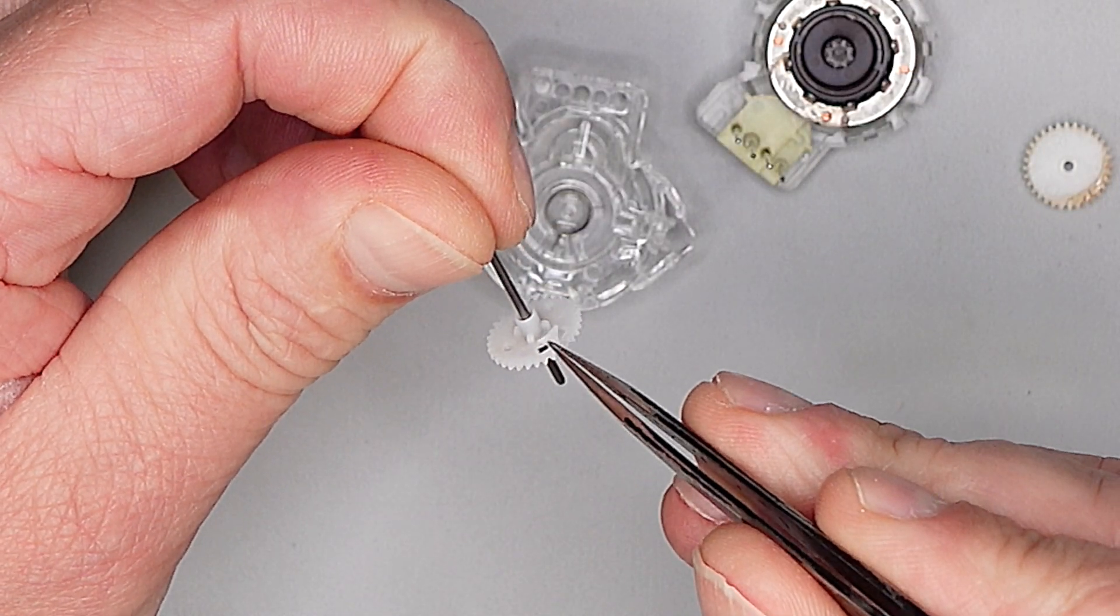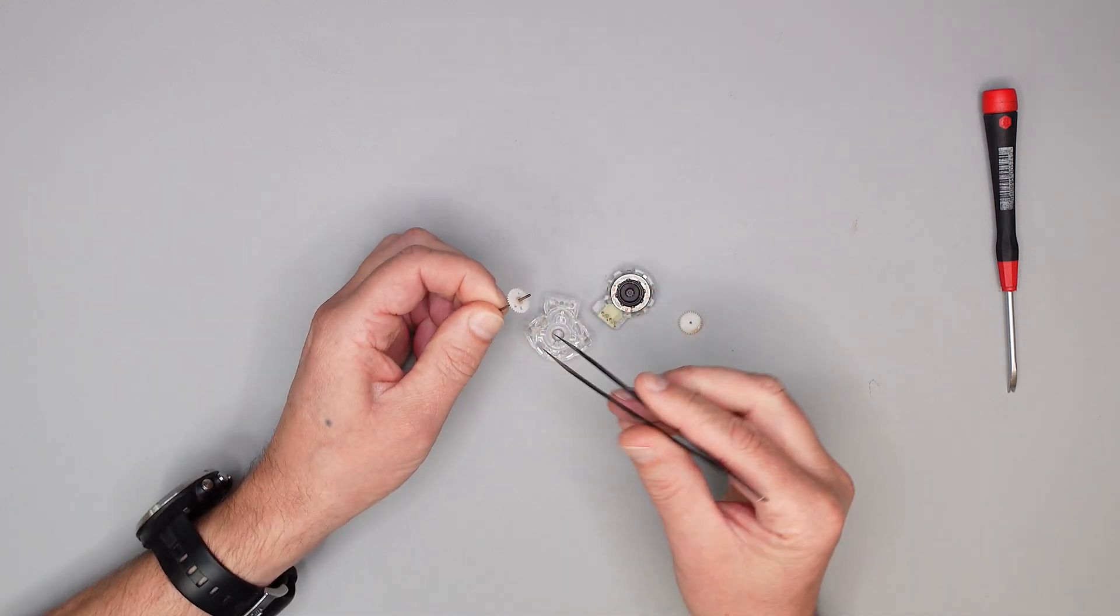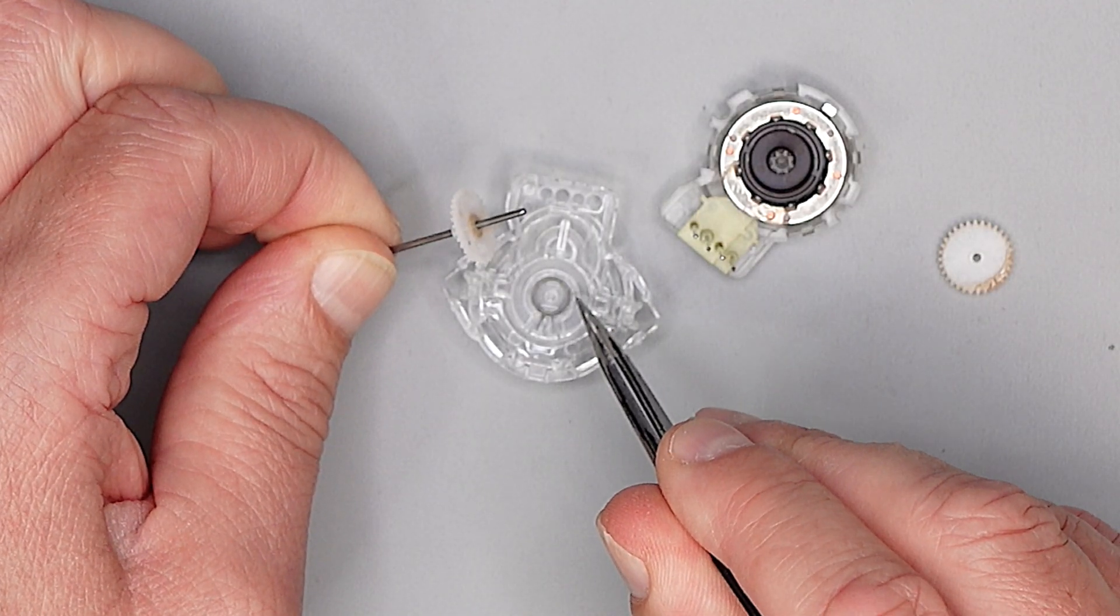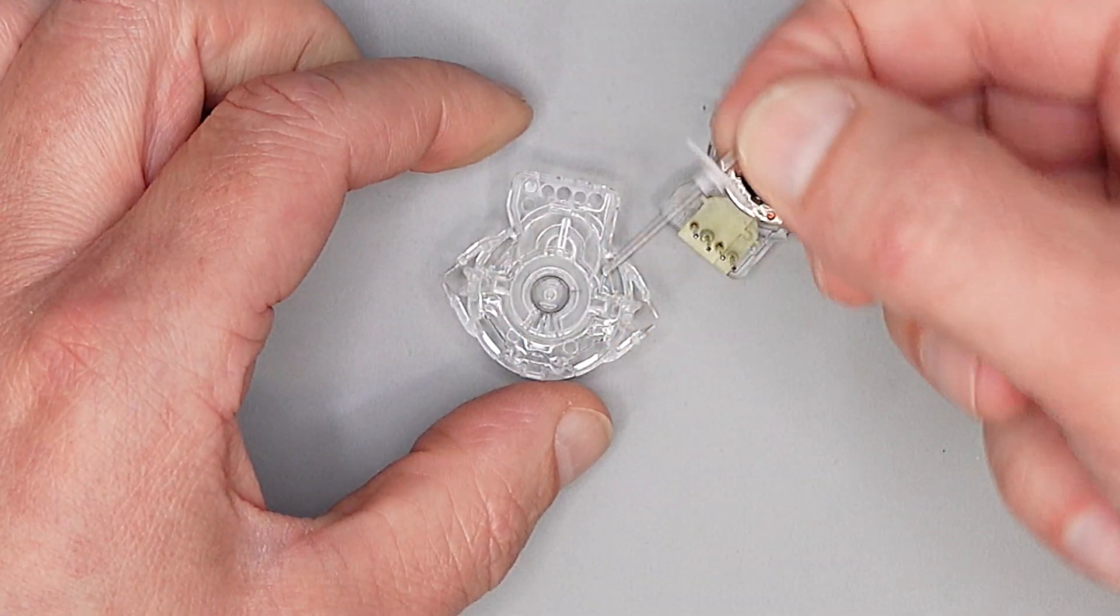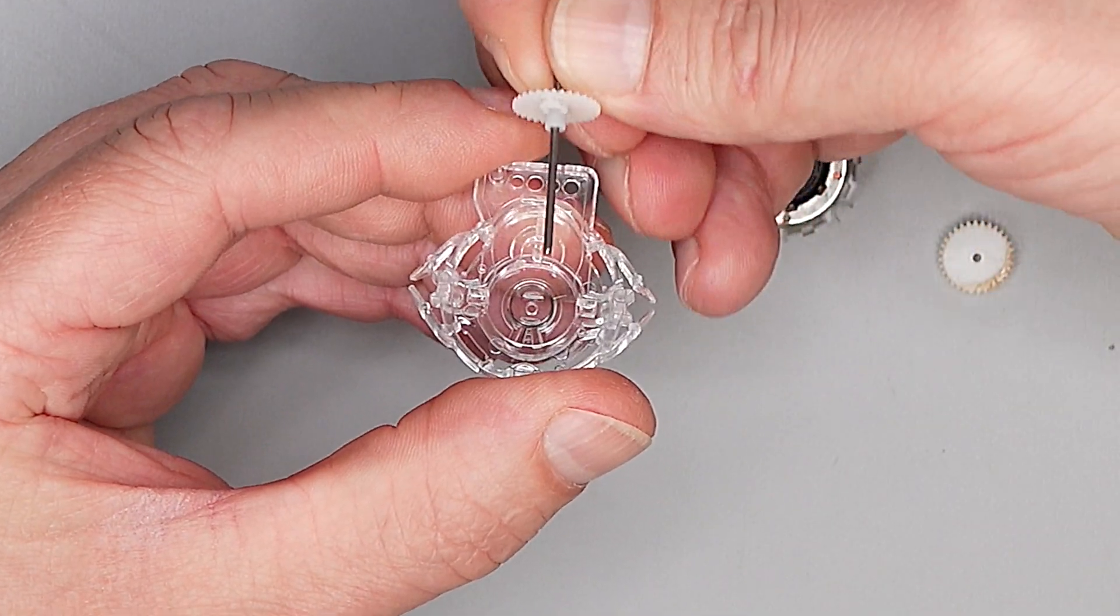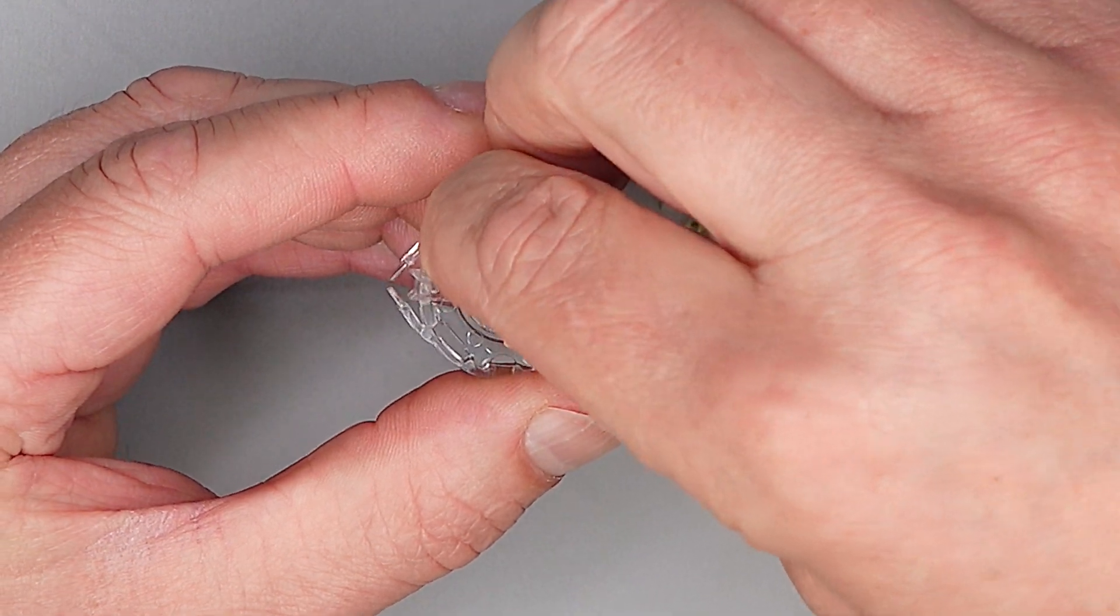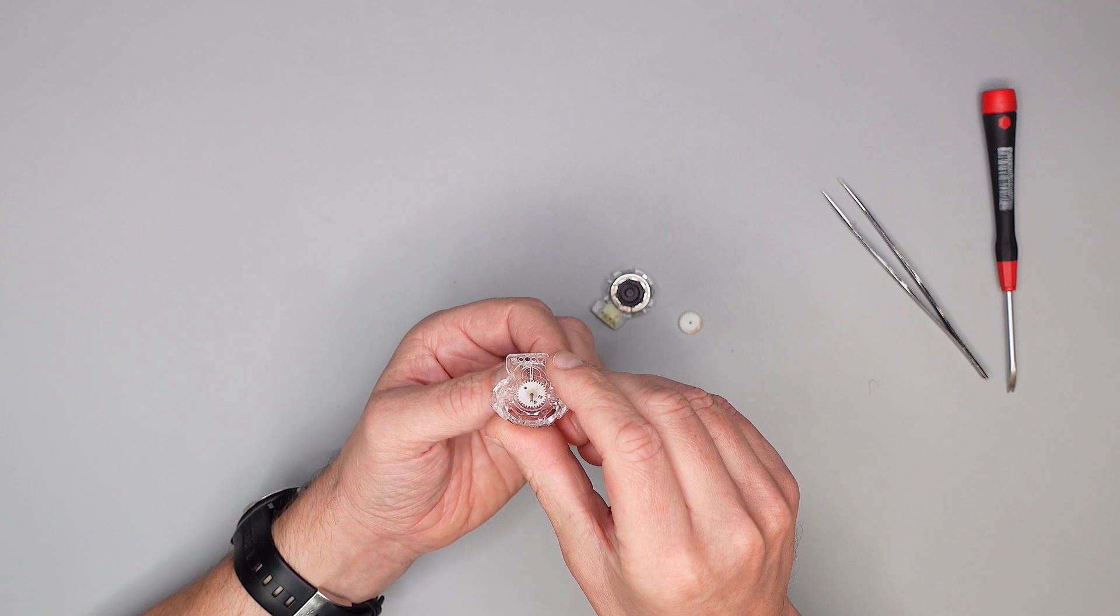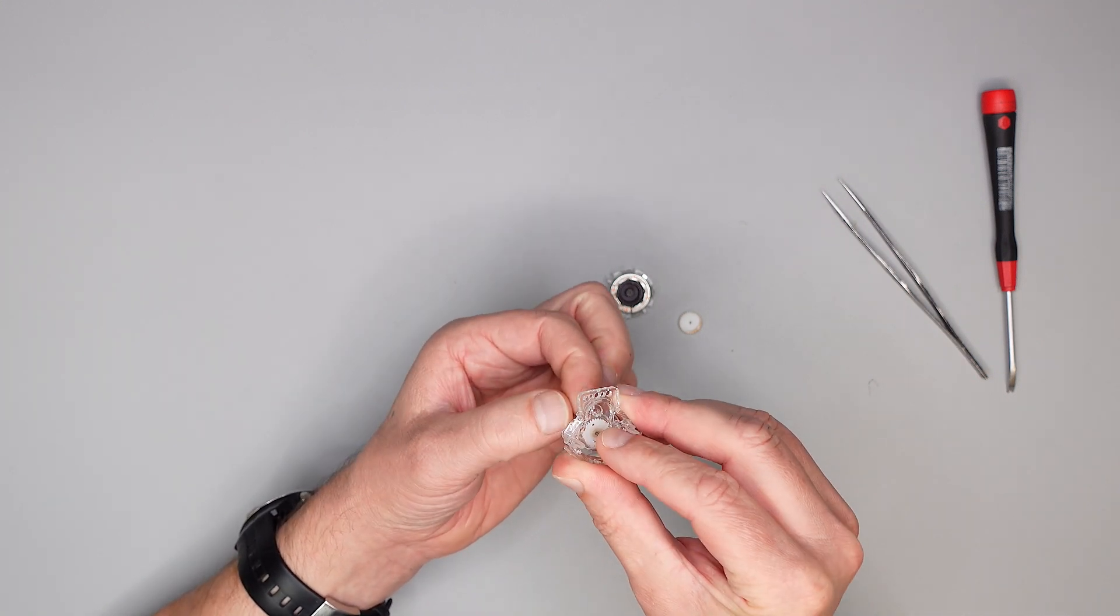So, hier ist unser anderes Zahnrad, und hier haben wir auch eine kleine Nase drauf. Die sitzt hier, und die fasst, dieser Mitnehmer fasst nachher in diese Feder hier rein, also in diesen Mitnehmer, da geht er rein. Also setzen wir, halten das vorsichtig fest und setzen es so auf, dass die Nase nach oben zeigt und noch nicht vom Mitnehmer ist. So, lassen es jetzt nicht runterfallen.